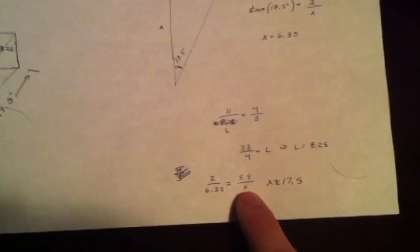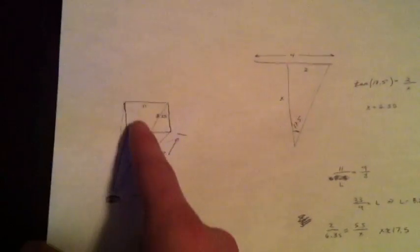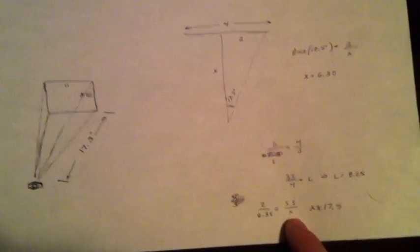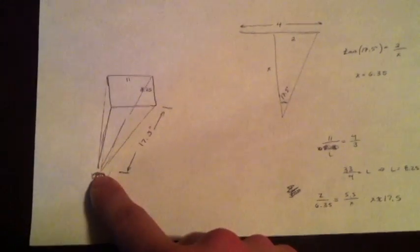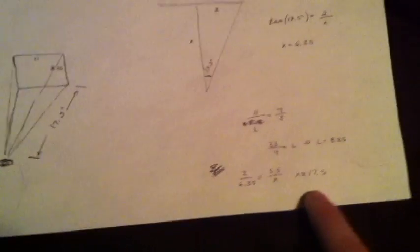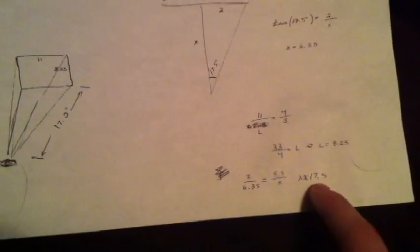All right, and 2 over this value is equivalent to 5 1⁄2, because we cut this 11 1⁄2 here. So, we're just doing a similar triangle, that's all we're doing. So, 5 1⁄2 over what distance, what new distance away from our eyes are we holding this piece of paper? And that comes out to be roughly 17 1⁄2.